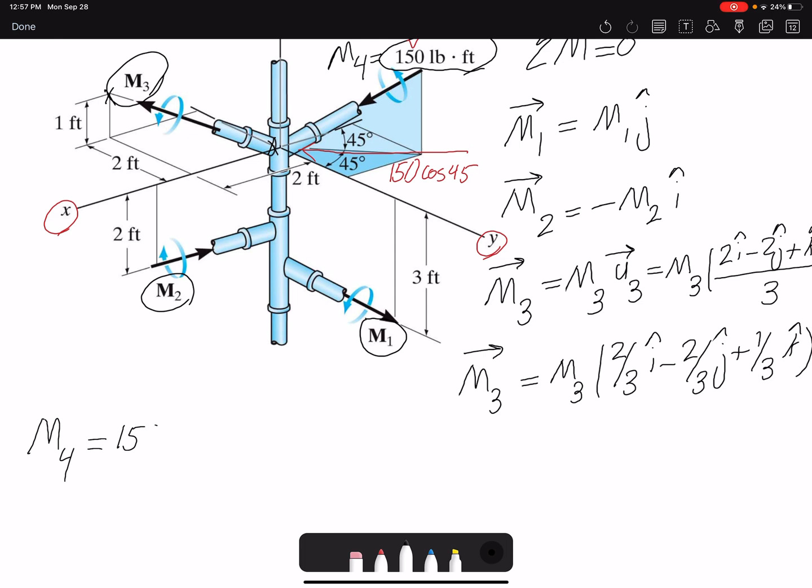So M4, the magnitude is 150 cosine 45 - that gives me the projection. Another cosine 45 will give me the i component, and it will be towards positive i. My x component will be positive x. The j component is towards negative y, so that will be negative cosine 45 cosine 45 j, and the k component would be negative as well, sine 45 k.